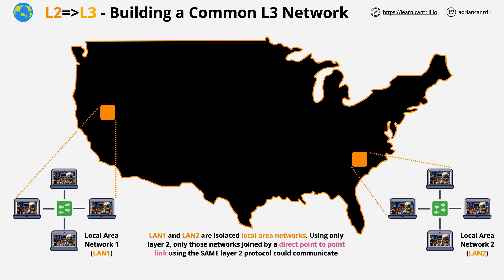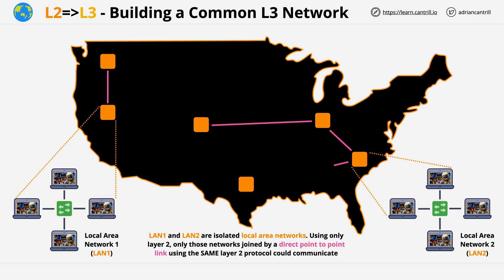With the example which is on screen now, imagine if we had additional locations spread across the continental US. In between these locations, let's add some point-to-point links. We've got links in pink, which are cabled connections, and these go between these different locations.